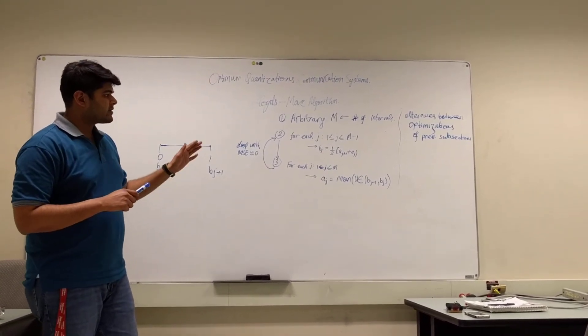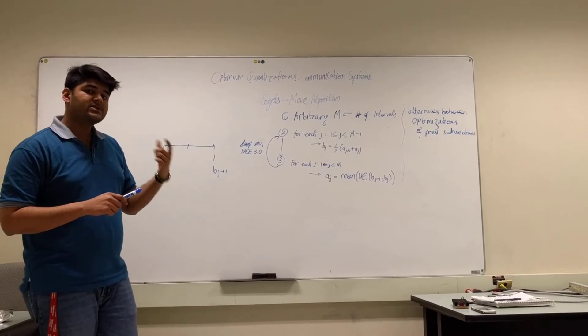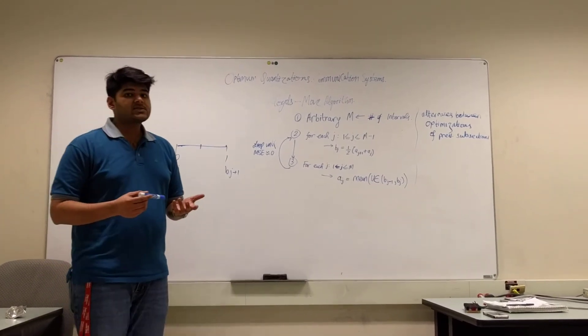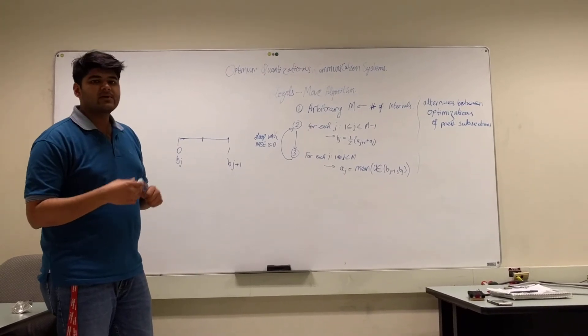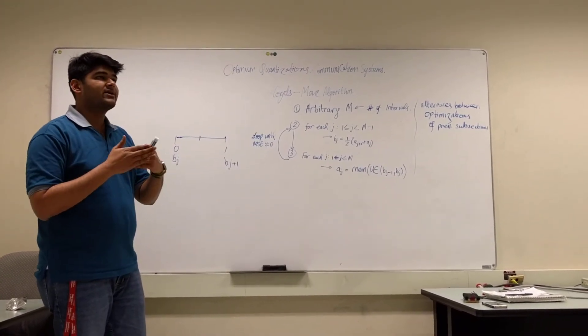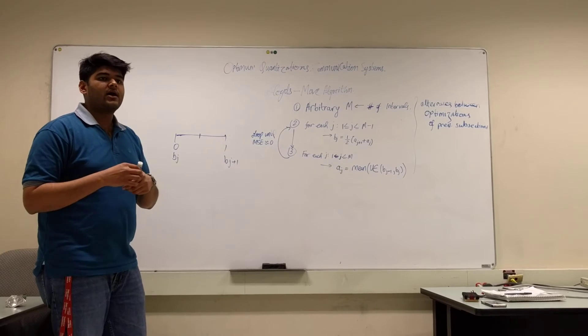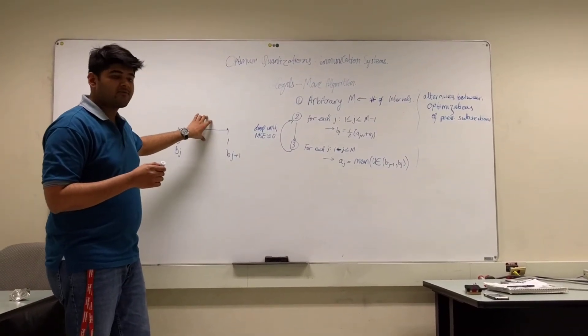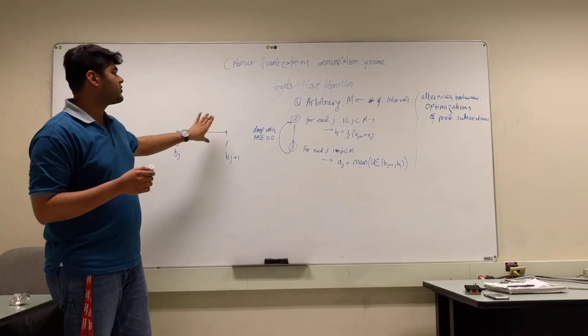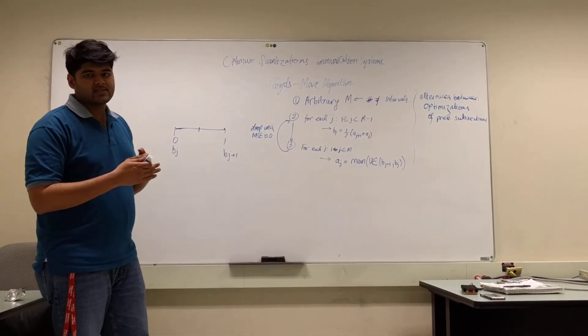Because in the Lloyd's algorithm, you're also keeping track of the mean squared error. What is the mean squared error? It is the difference between the different points that you could take within that interval itself to give you a more accurate answer.